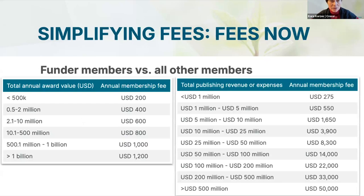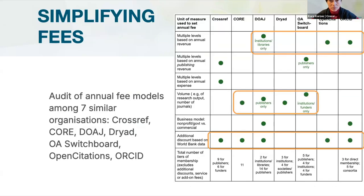Our next goal is simplifying our fees. The current fee structure has several different levels — you don't need to memorize them all, but it provides the perspective that there are many different levels. We also currently differentiate between funder members and other members. One of the problems is that not all 'other members' or publishing members actually have publishing as their key activity, and especially not necessarily as their key revenue-yielding activity, which causes a challenge.